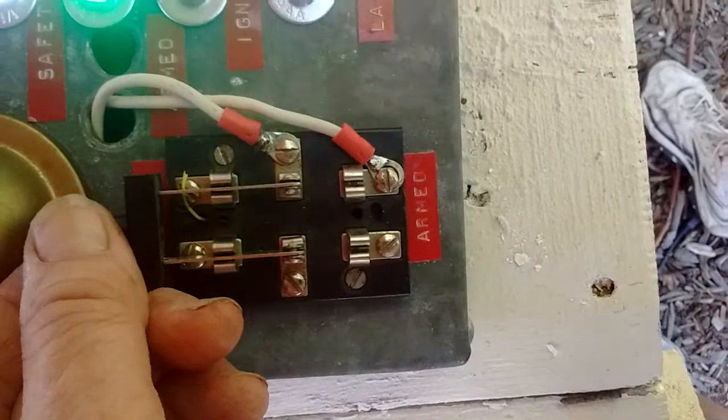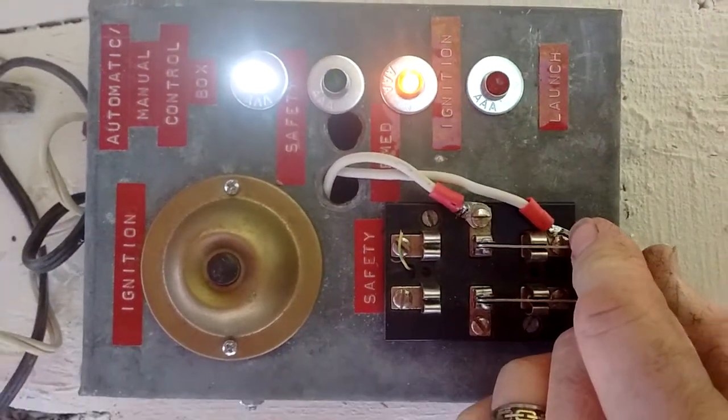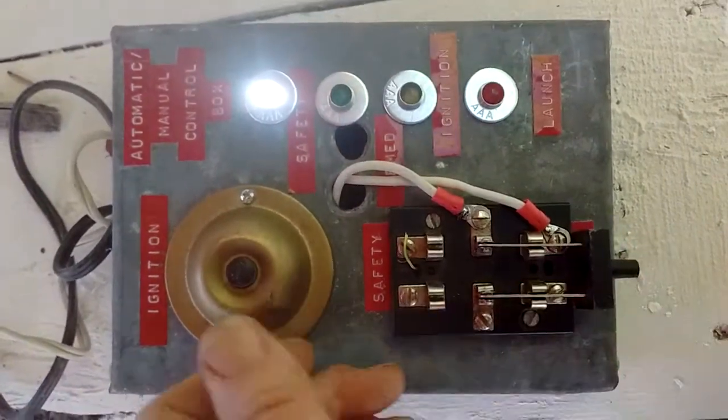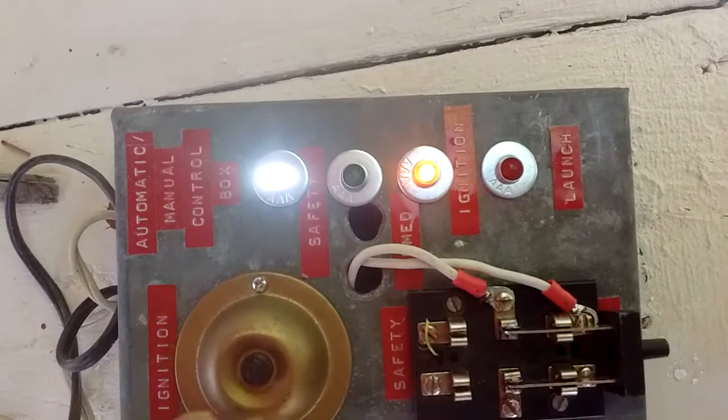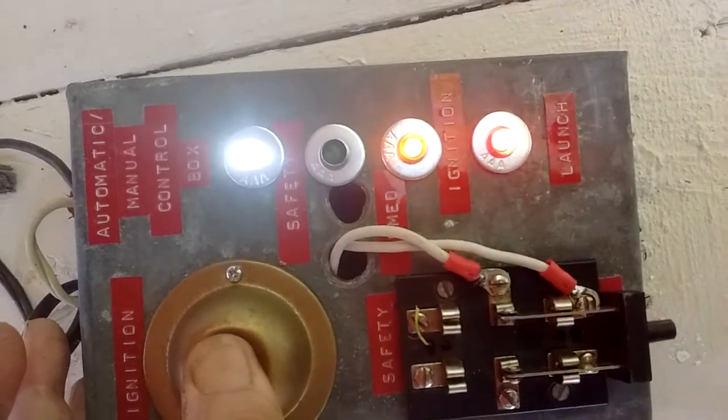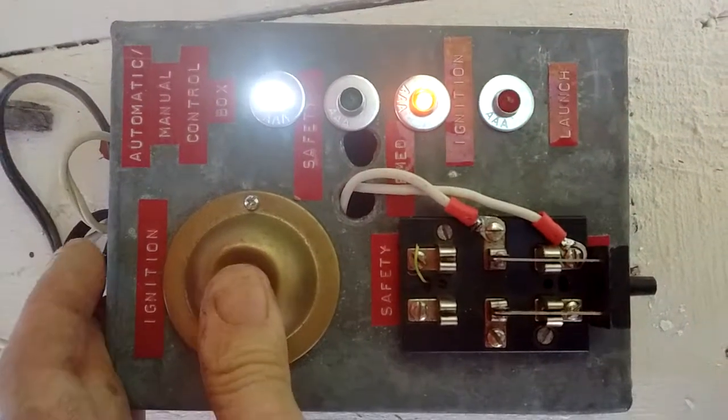When you throw the throw switch over to the arm position, the amber light comes on. And now when you push the main button, the ignition occurs and the red light comes on, and the igniter shoots off the model rocket.